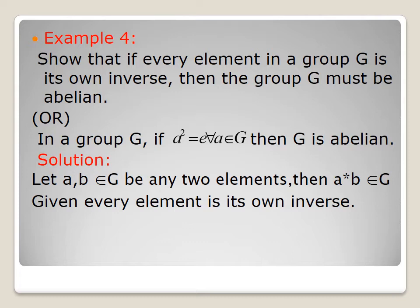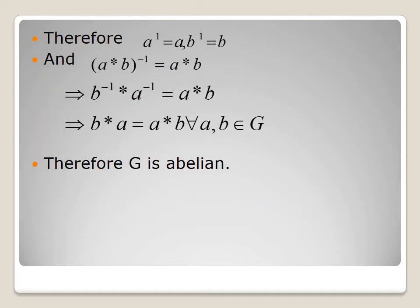Solution: Let a, b ∈ G be any two elements. Then a·b ∈ G by the closure property. Given that every element is its own inverse, a⁻¹ = a and b⁻¹ = b. By closure, (ab)⁻¹ = ab. Now, (ab)⁻¹ = b⁻¹·a⁻¹ = b·a. Therefore b·a = a·b for all a, b ∈ G. This is the abelian condition, so G is abelian.